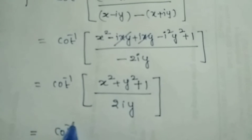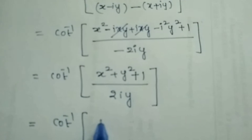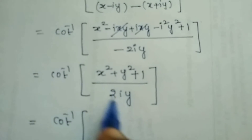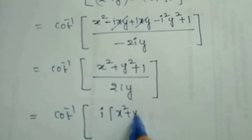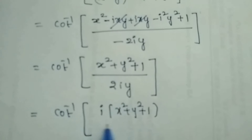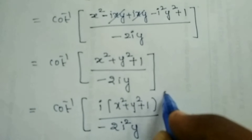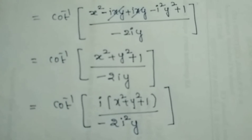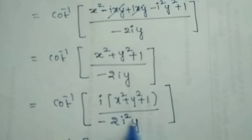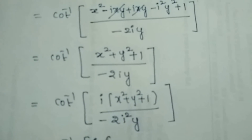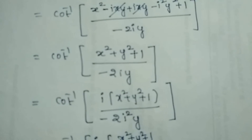Now we need to eliminate i from the expression. Dividing and multiplying by i: we get i times x squared plus y squared plus 1, divided by i squared times 2y. Since i squared equals minus 1, and there is already a minus, this becomes a positive term: i times x squared plus y squared plus 1, divided by 2y.